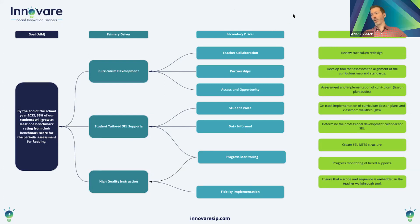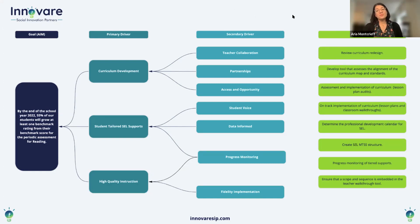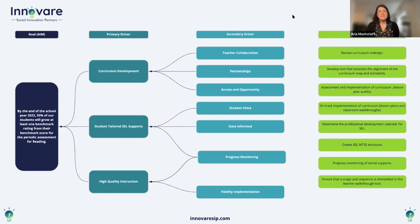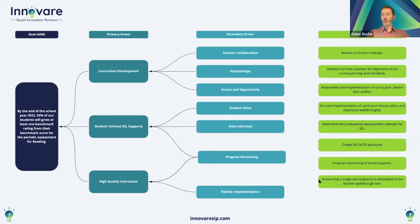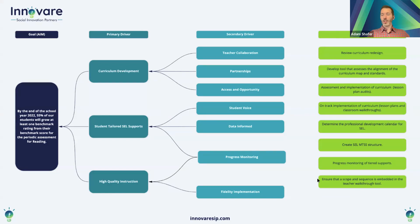We've talked about several different frameworks — the driver diagram, SMARTIE goals, theory of change, and PDSA cycle. PDSA actually lives within this: your planning is that theory of change, but the rapid learning cycles are your change ideas. If your aim could be a year-long school year aim, you can build multiple PDSA cycles within that. For your first PDSA cycle, try out a change idea — ensure scope and sequence is embedded in the teacher walkthrough tool. If it works, replicate it and move on to the next PDSA. If it doesn't work, eliminate that from your list of options — you've proven that change idea doesn't impact the end goal.